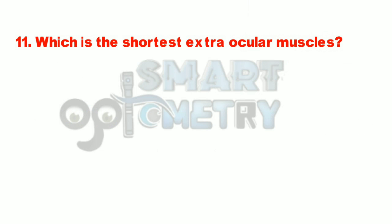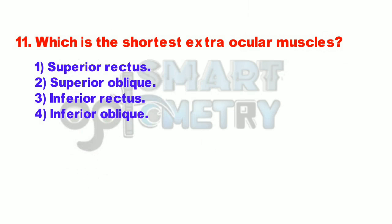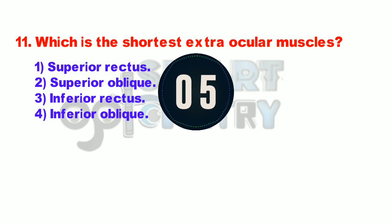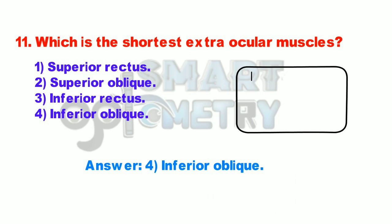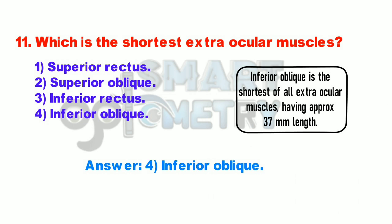Q11. Which is the shortest extraocular muscle? 1. Superior rectus. 2. Superior oblique. 3. Inferior rectus. 4. Inferior oblique. Inferior oblique is the shortest of all extraocular muscles, having approximately 37 mm in length.